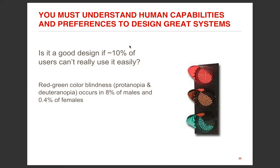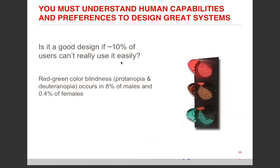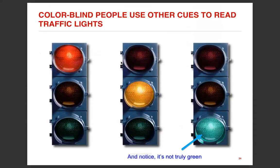Consider red, yellow, and green — color blindness occurs in 8% of males and 0.4% of females. Colorblind people use other cues to read traffic lights. Some people, when they see red, it appears green to them — they can't differentiate between red and green. The traffic light has not been changed because those affected are less than 10% of users.